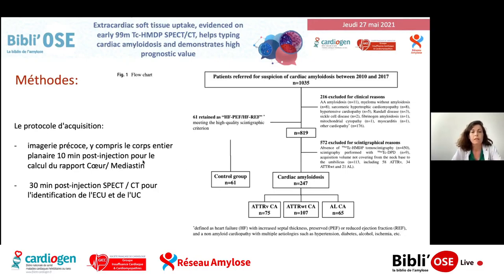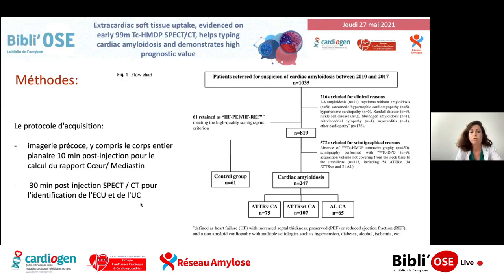La scintigraphie osseuse a été faite avec un cliché précoce à 10 minutes post-injection, qui permettait de calculer le rapport cœur sur médiastin. S'il était supérieur à 1,21, on posait le diagnostic d'amylose transthyrétine. Des clichés à 30 minutes, donc précoces, avec une tomo-scintigraphie permettant, sur les clichés corps entiers, d'établir la fixation cardiaque et extracardiaque.